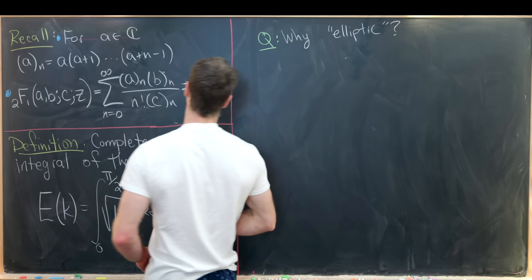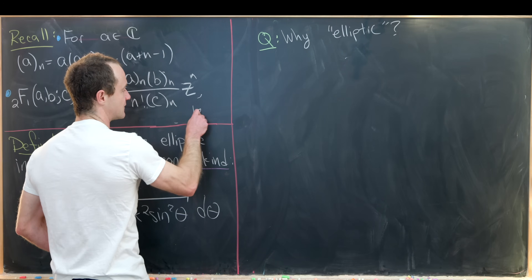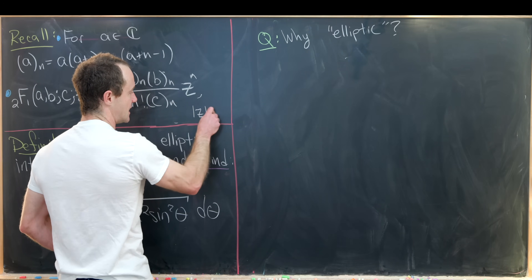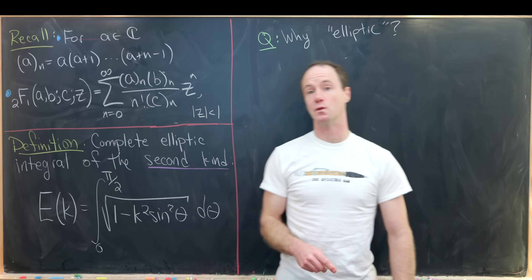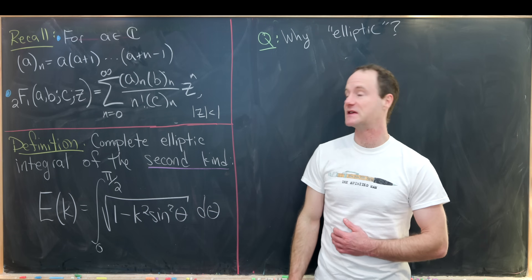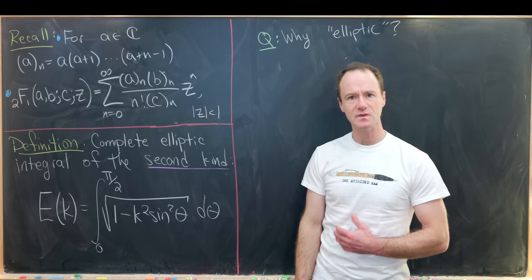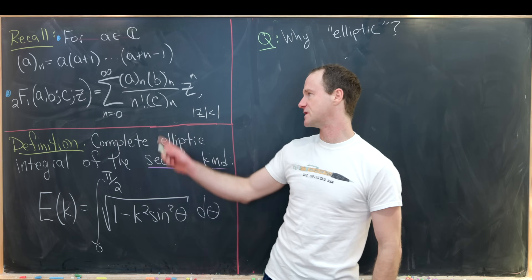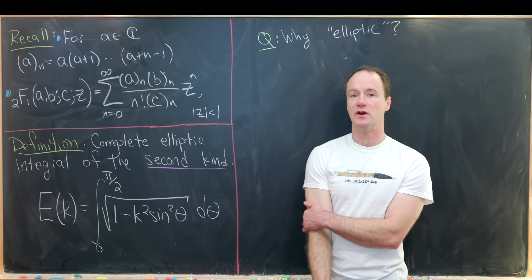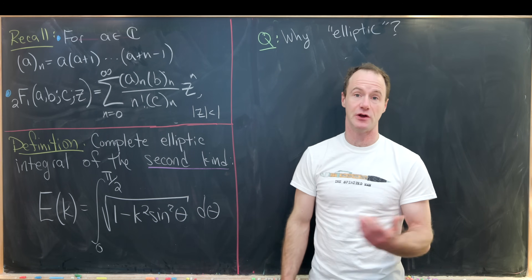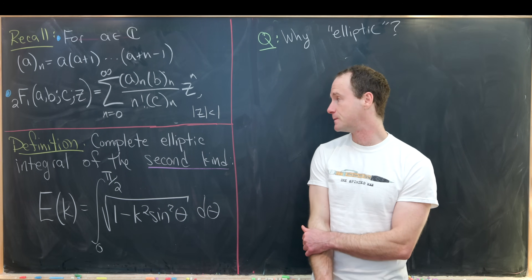It should be pointed out that this converges when the modulus of z is less than one. Here we can take z to be a complex number. Furthermore, there's a bit of a restriction on c, which we noted in the last video.